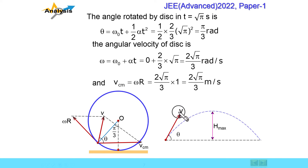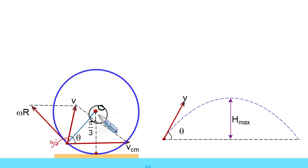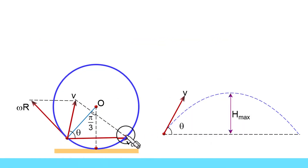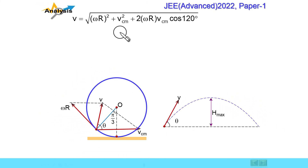We need to find the value of net velocity v and angle theta. The angle between the two velocity vectors — since the disk has rotated pi by 3, and the tangential direction is 90 degrees to the radius, this is a right angle triangle. The angle becomes pi by 6 (30 degrees), making the angle between the two vectors 120 degrees. Now with both vectors at 120 degrees, their vector sum is: v equals under root of (omega r)² plus vcm² plus 2 times omega r times vcm times cos 120.